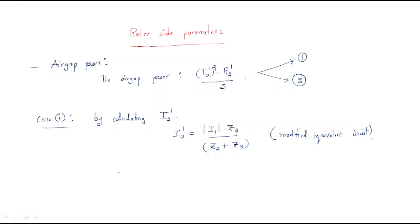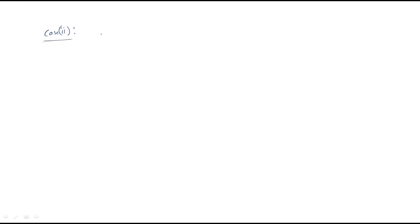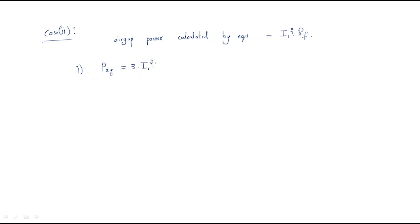Case 2: The air gap power can also be calculated by the equation: air gap power equals three times I1 squared times Rf — that is, Pgap = 3 × I1² × Rf. Here I1 is the current and Rf is the resistance corresponding to the air gap power.